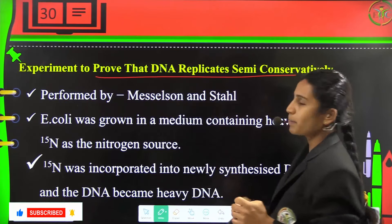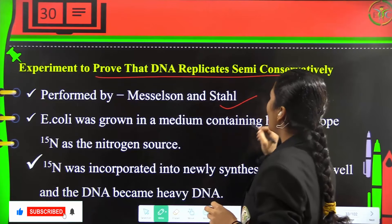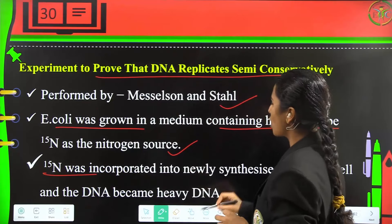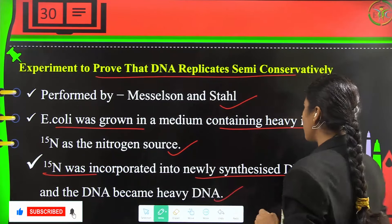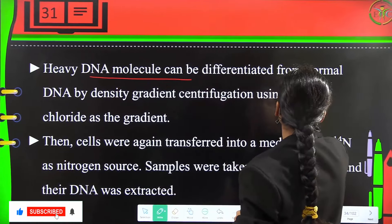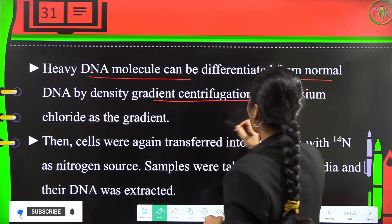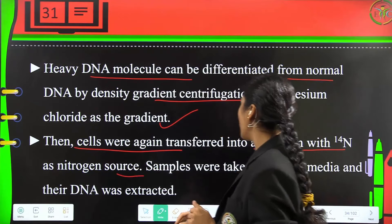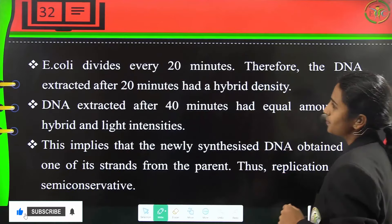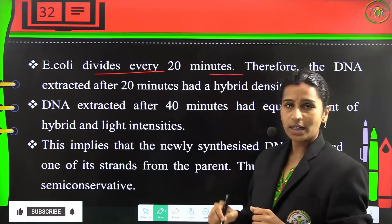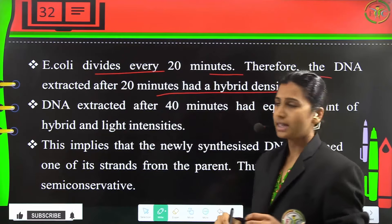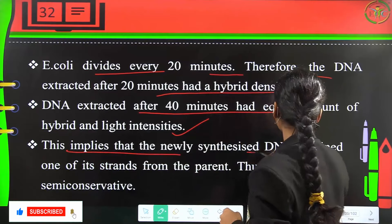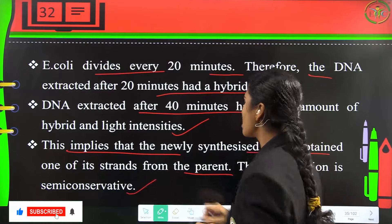The experiment proving semi-conservative replication was performed by Meselson and Stahl. E. coli was grown in a medium containing heavy isotope ¹⁵N as the nitrogen source, which was incorporated into newly synthesized DNA, making it heavy DNA. Heavy DNA can be differentiated from normal DNA by density gradient centrifugation using cesium chloride. Cells were then transferred to a ¹⁴N medium and DNA was extracted. Since E. coli divides every 20 minutes, DNA after 20 minutes had hybrid density, and after 40 minutes had equal amounts of hybrid and lighter DNA — confirming that replication is semi-conservative.